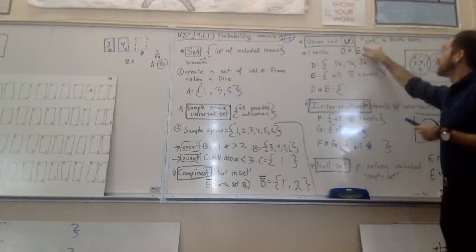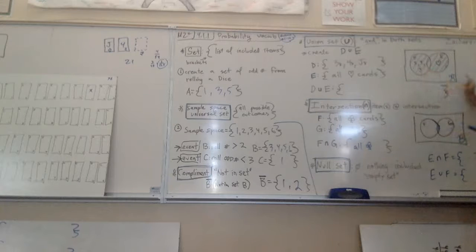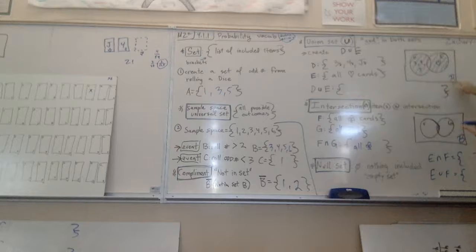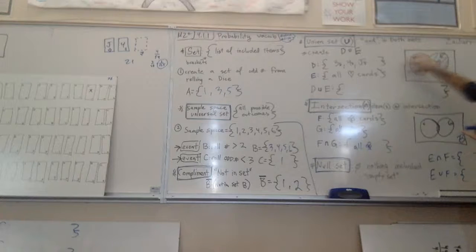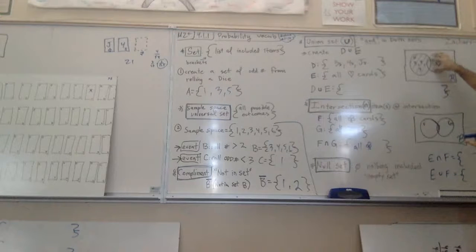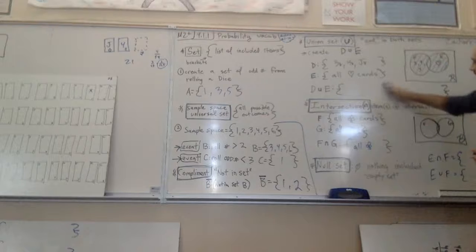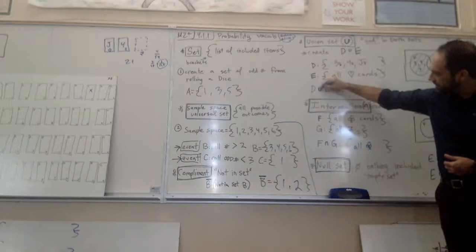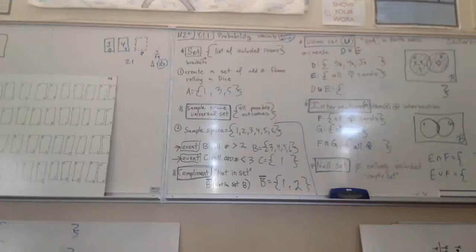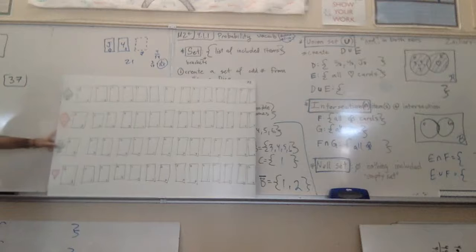Alright, these two are our last two. These are the main things for today. So a union are all the values in both sets. So you see here, you may see this listed this way. This is our sample space R, just listing the whole space. We have set D. D is the threes, the fours, and the jacks. Set E are all of the hearts. So if I'm looking for this new set of D union - D union E, let's see what that means.